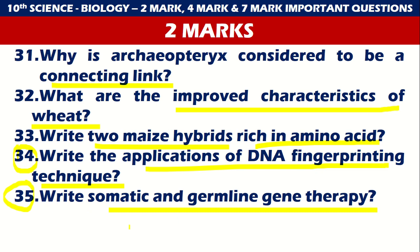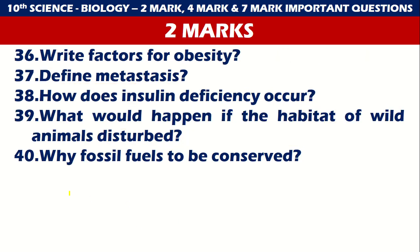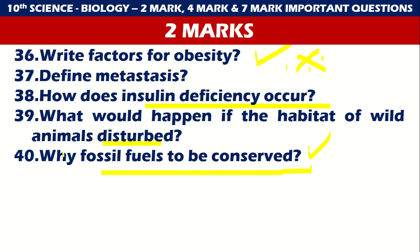Questions 36 to 40: Write the factors of obesity — this is very, very important and this question usually comes. Define metastasis. How does insulin deficiency occur? What would happen if the habitat of wild animals is disturbed? Why should fossil fuels be conserved? These are the top 40 questions, which are very important for your public examination.